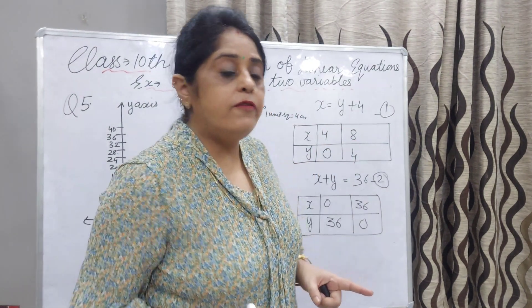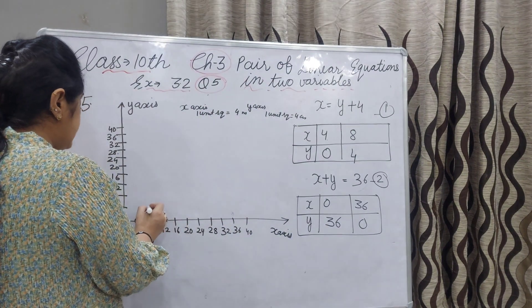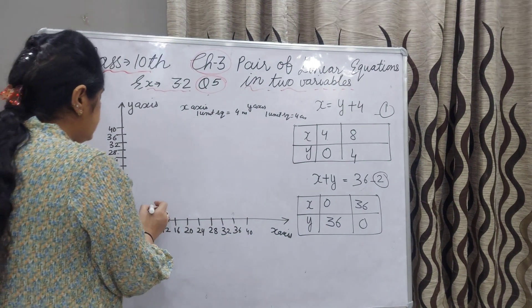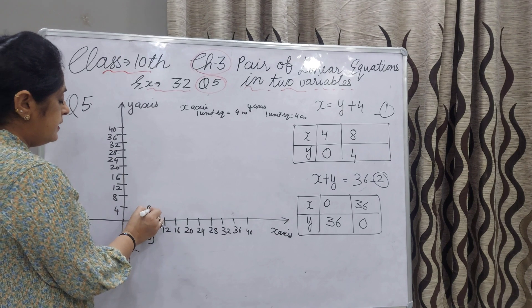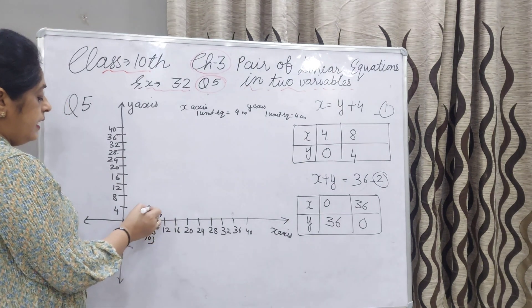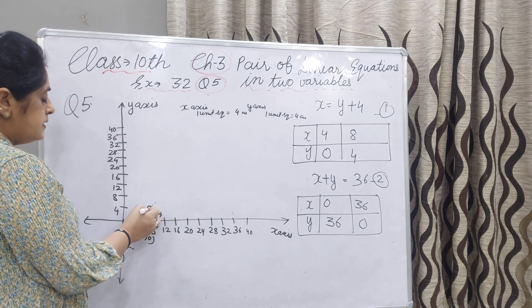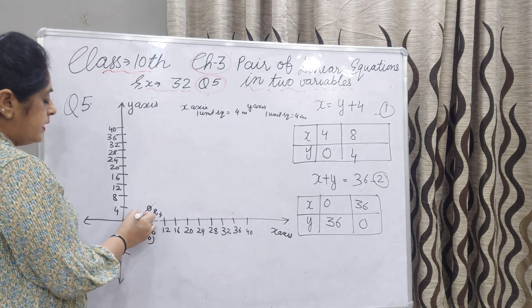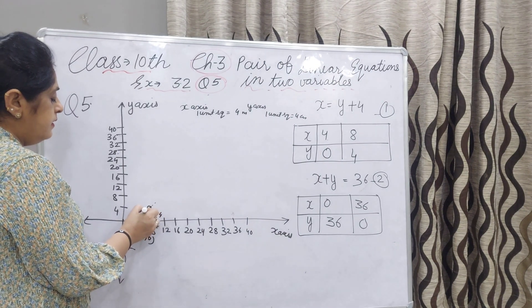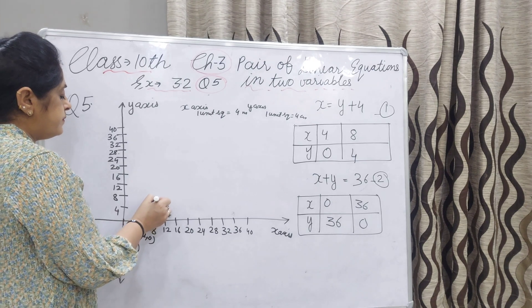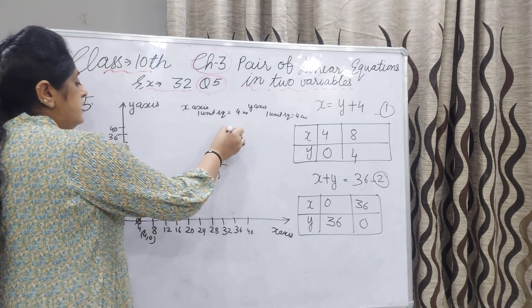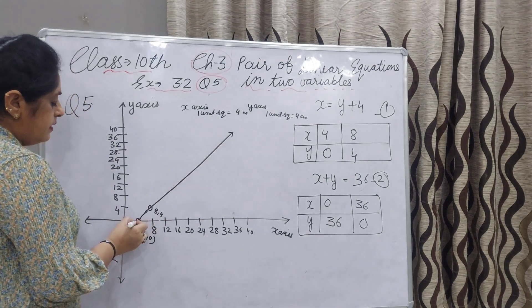Now we will take the second point: x 8 and y 4. This is the point. Here x 8 and y 4. And then we will join this. I have joined with my hand - you can draw with a scale.